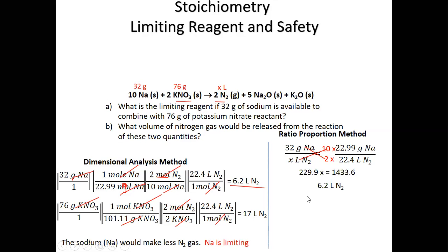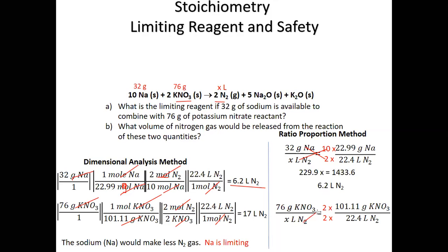Applying ratio-proportion to potassium nitrate: given 76 grams of KNO₃ over x liters of N₂. Right-side fraction uses molar mass 101.11 g for KNO₃ and 22.4 L for N₂. Apply mole coefficients: 2 for N₂ on top, 2 for KNO₃ on bottom. Cross-multiply, then divide each side by 202.22 to get 17 liters of nitrogen.